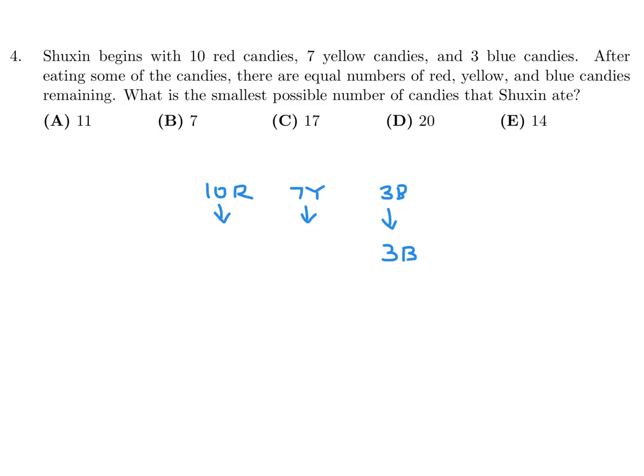Well, you could go lower than 3, but then you would no longer satisfy that criteria, because we want the smallest. So then 3 yellow and 3 red. So how do we go from 10 R to 3 R? We had to eat 7 R. And then to go from 7 Y to 3 Y, we had to eat 4. So 7 and 4 is how much she ate, and that is 11. So number 4, the answer is A.